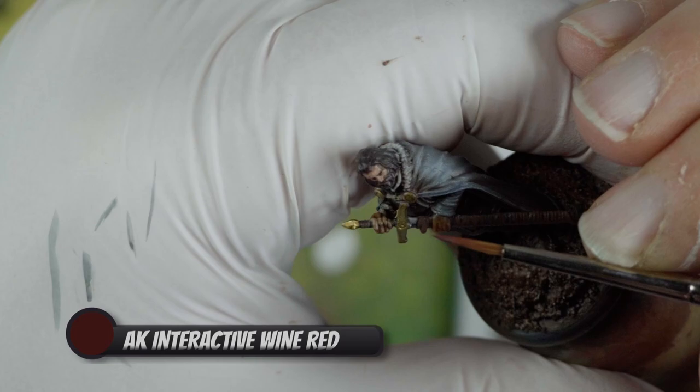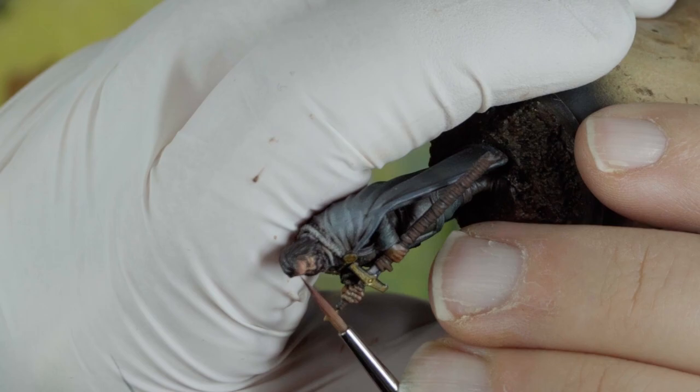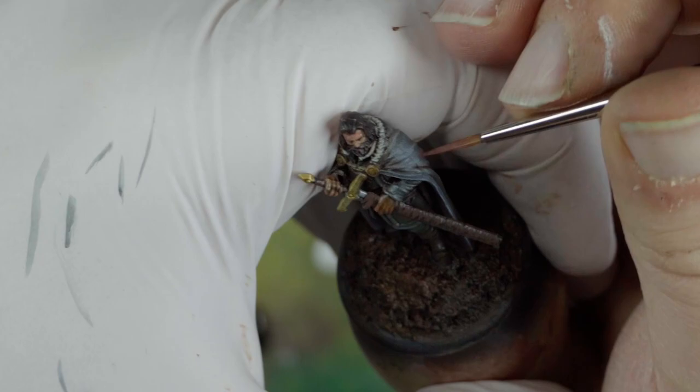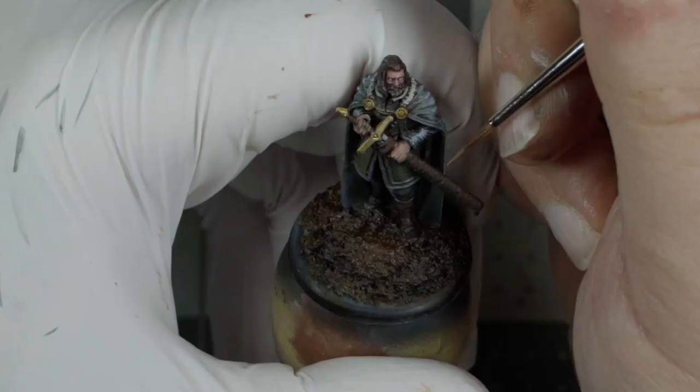And then I spend quite a while fixing the mess that I made of the skin tone. Undoing my mistake with that flesh tint actually probably took an hour, and the whole paint job was maybe three. So I was really annoyed. Anyway. So after re-establishing the base tone of the flesh, with Scale 75 light skin and basic flesh, I glaze some AK Interactive Wine Red into the recesses to bring life back to the face, and do the same thing on the hands.